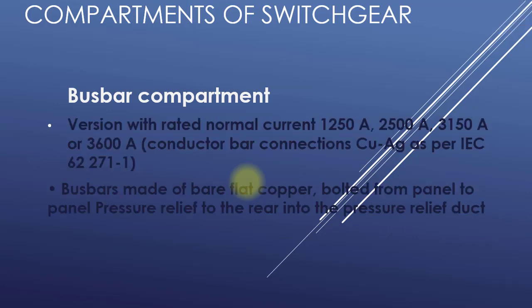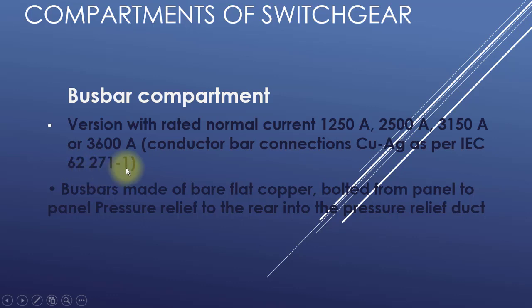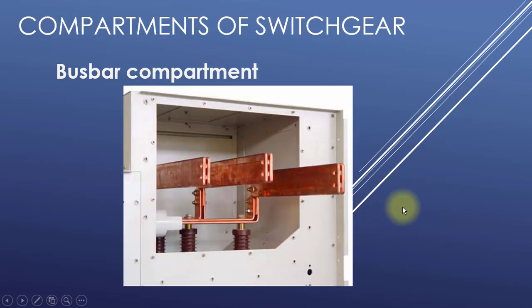Bus bar compartment versions with rated normal current of 1250, 2500, 3150, or 3600 amperes are used. As bus bar conductors, conductor bar connection CU-AG as per IEC standard 62271-1 are used. Bus bars are made of bare flat copper, bolted from panel to panel, with pressure relief to the rear into the pressure relief duct.